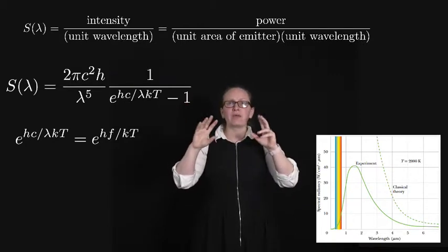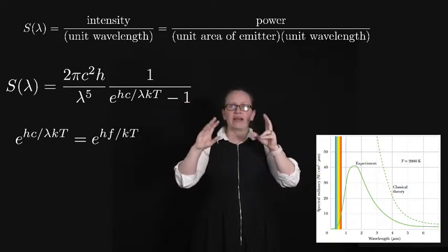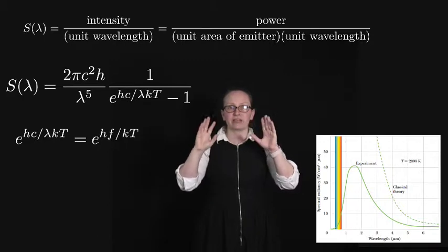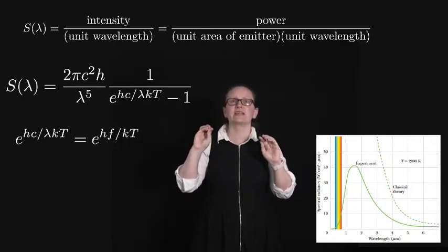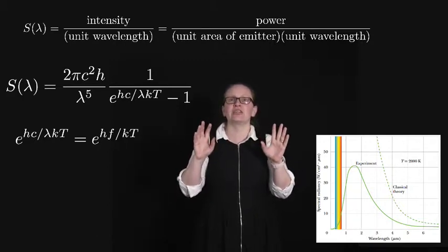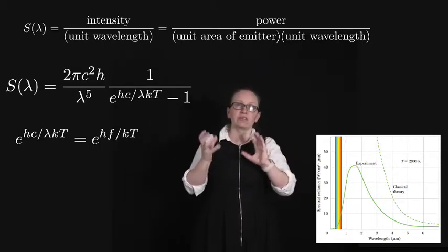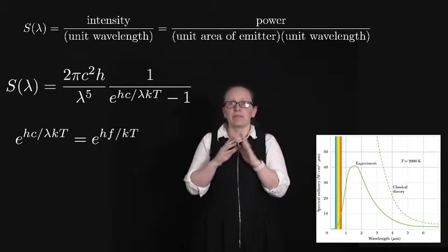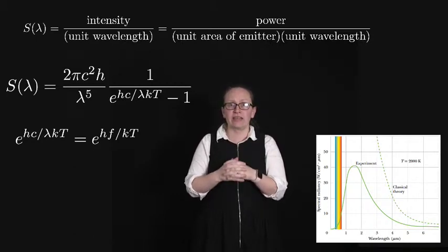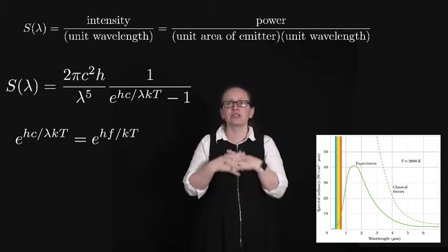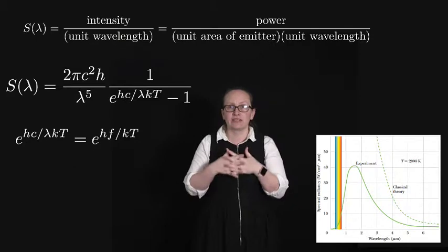One way to explain why the spectral radiance function has the form Planck suggested is to assume that the energies of the atomic oscillators in the cavity walls are quantized. But Planck was a firm believer in classical physics. So he strongly resisted this interpretation.